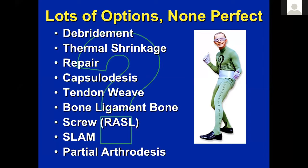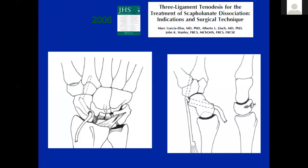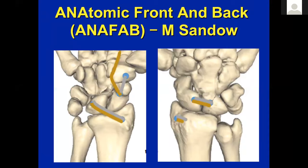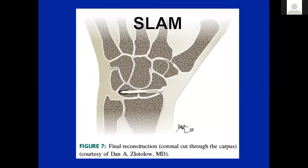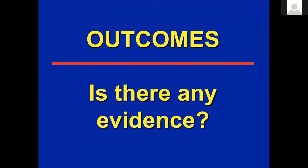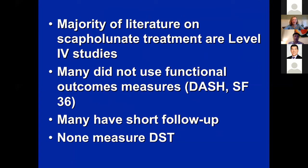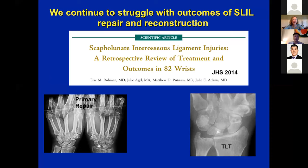Other options include Rosenwasser's RASL — the screw between the scaphoid and lunate — the SLAM procedure, arthroscopic capsulolabral repair, and internal brace with swivel lock. Regarding outcomes, unfortunately the majority of the literature on scapholunate treatment are level four studies, many without functional outcome measures, short-term follow-up, and none measuring dorsal scaphoid translation. Julie Adams and her group published that many problems still happen after surgery, with a 20% failure rate at six months. We continue to struggle with outcomes.